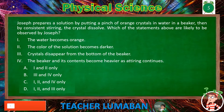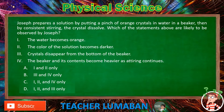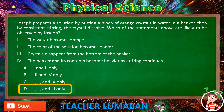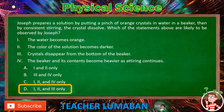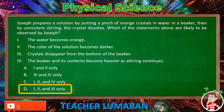The correct answer is letter D, Roman numerals 1, 2, and 3 only. Joseph prepares a solution by putting a pinch of orange crystals in water in a beaker, then by consistent stirring the crystals dissolve. The statements likely to be observed are: the water becomes orange, the color of the solution becomes darker, and the crystals disappear from the bottom of the beaker.